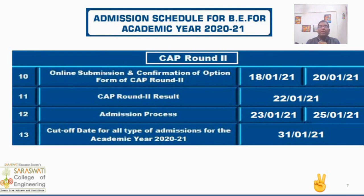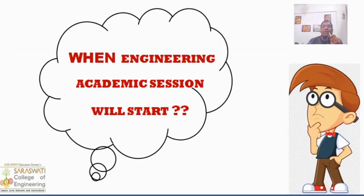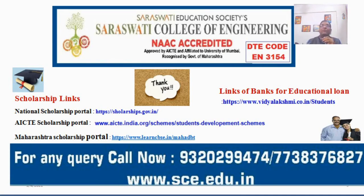One more option is available for those not happy with the allotment. On 26th January 2021, all institutes will publish their vacant seats on their websites or social platforms. You can take admission in those institutes, but it will be considered as non-CAP, meaning government facilities like scholarships will not be applicable for those seats. All admission processes for engineering first year 2020 to 2021 will be finished before 31st January 2021. Many students have doubts about when teaching of first year will start — it will start on 18th January 2021. Thank you for watching. For any doubts, you can call us on the given number on the slide or visit our website.